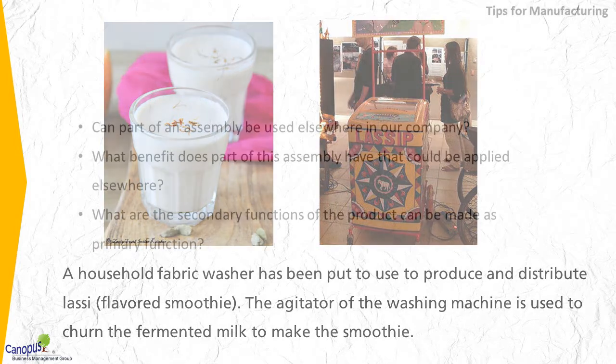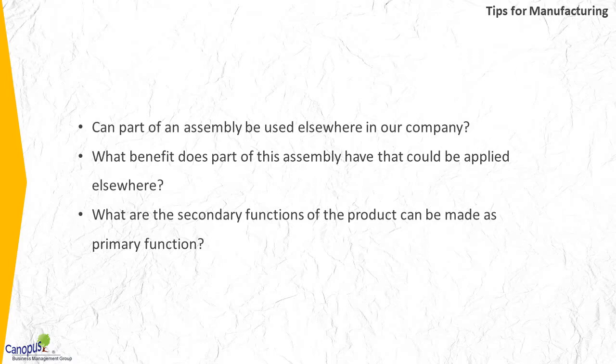Now let's talk about some tips. If you are in manufacturing, consider asking the following questions: Can part of an assembly be used elsewhere in our organization? What benefit does part of this assembly have that can be put to use elsewhere? What are the secondary functions of the product that can be made as primary functions elsewhere?